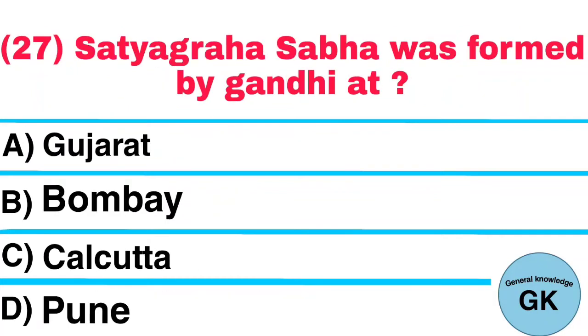Question number 27. Satyagraha Sabha was formed by Gandhi at: A. Gujarat, B. Bombay, C. Calcutta, D. Pune. Answer: Bombay.